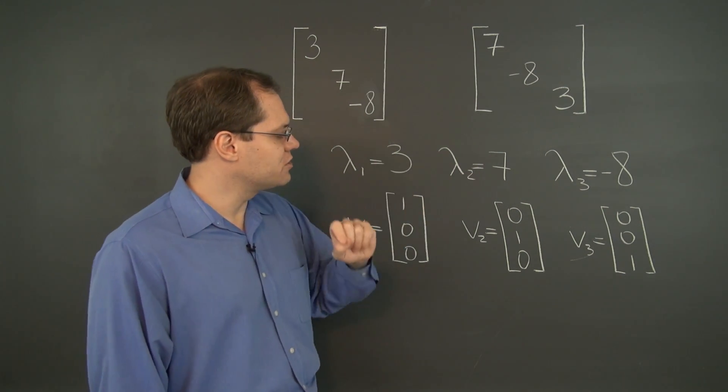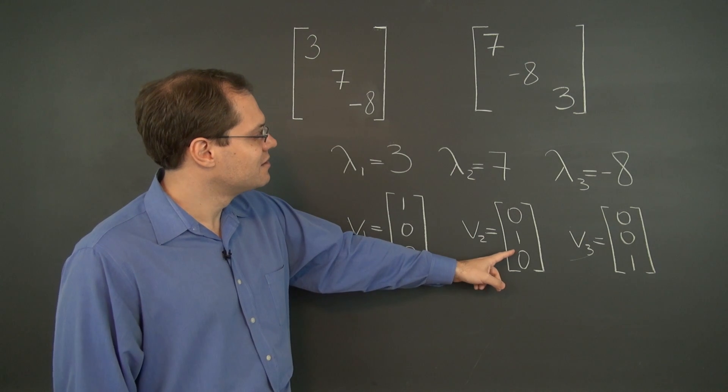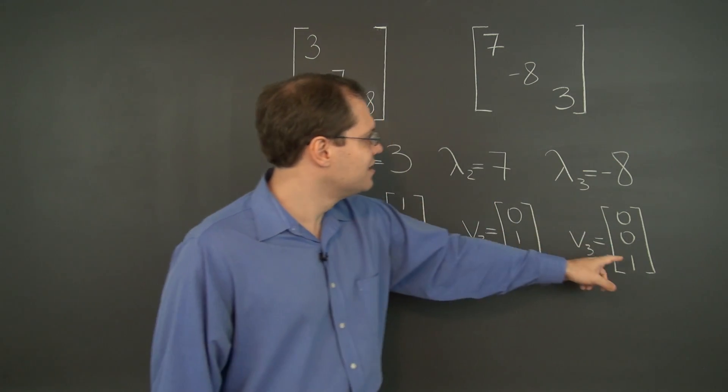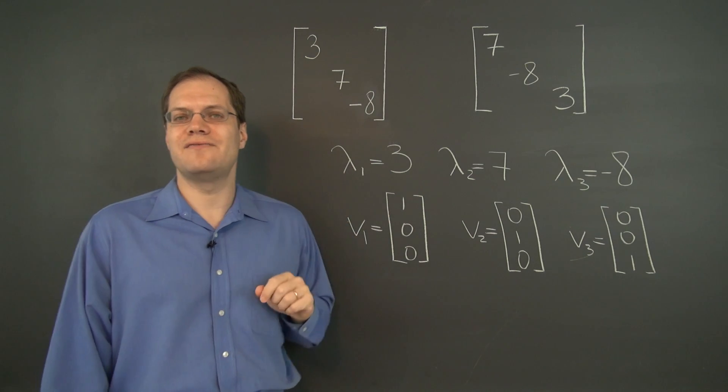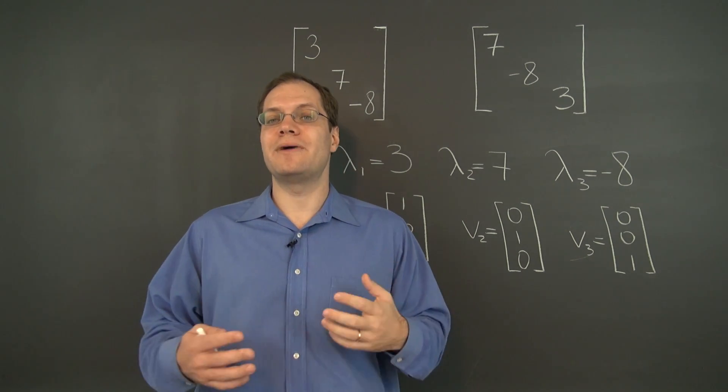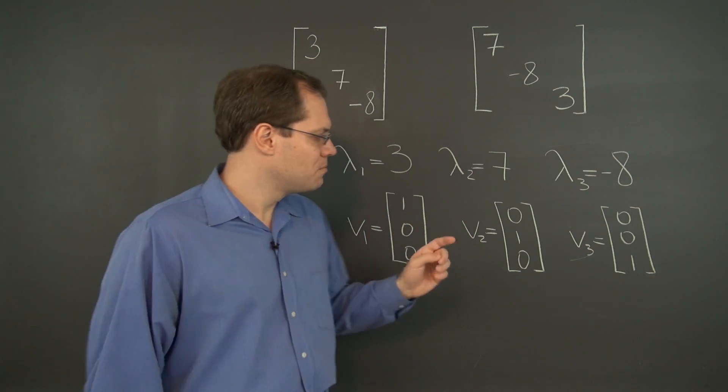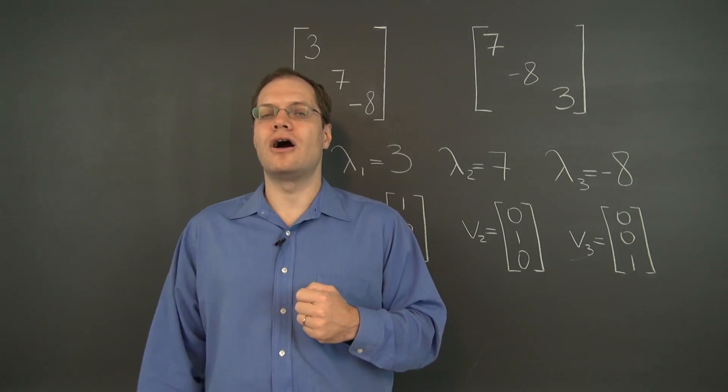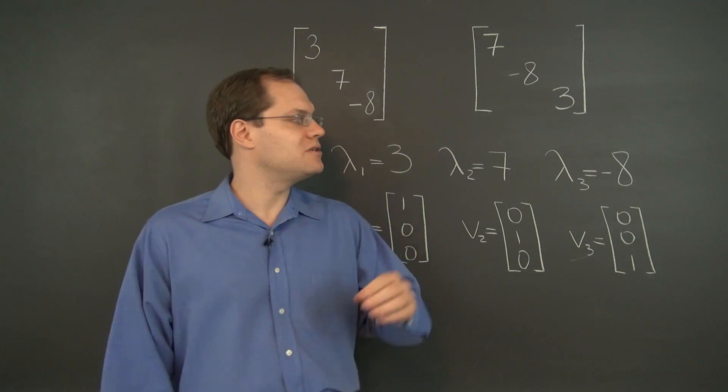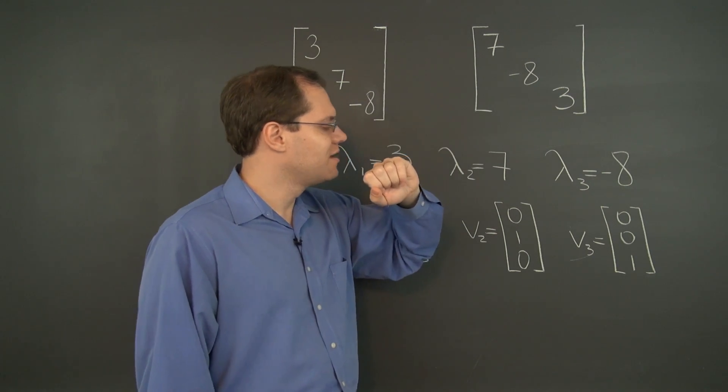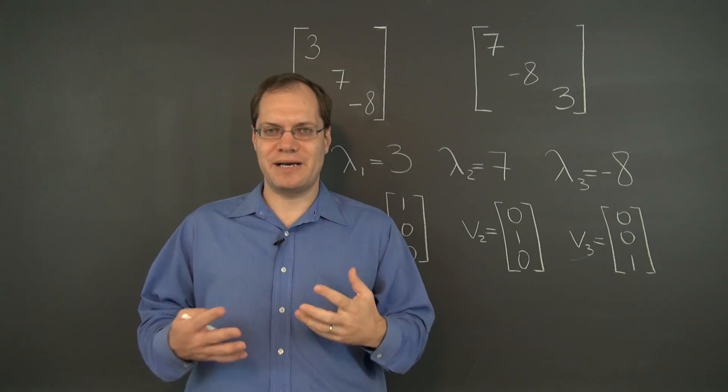of course, this eigenvector would correspond to the eigenvalue 7, this one would correspond to the eigenvalue negative 8, and this one would correspond to the eigenvalue 3. So, same eigenvalues and eigenvectors maybe, but the correspondences are not the same. So, I would actually say that this matrix and this matrix have different spectra.